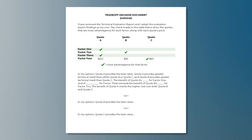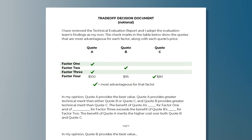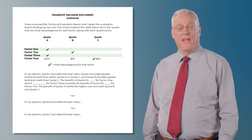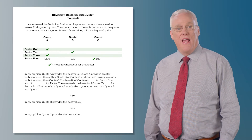The technical evaluation report goes to the selecting official who will do the trade-off to select the best value to the government. Here is a notional template for a trade-off decision document. Look at the table towards the top of the document — you can see the three non-price factors numbered one, two, and three, with the addition of price as factor four, and the three quotes A, B, and C. The checkmarks identify which quote is most advantageous for each factor. Quote A is most advantageous for factors one and three, quote B is most advantageous for factor two, and quote C is most advantageous for factor four.